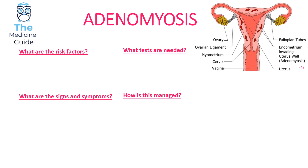Now we're going to look at adenomyosis. Adenomyosis is where you have endometrial tissue found within the myometrium — that's the muscular layer of the uterus. In terms of risk factors, if a woman presents with heavy menstrual bleeding or dysmenorrhea, she is more likely to suffer from adenomyosis.